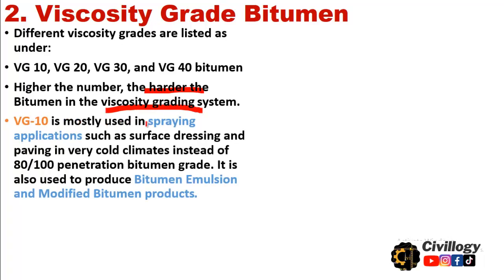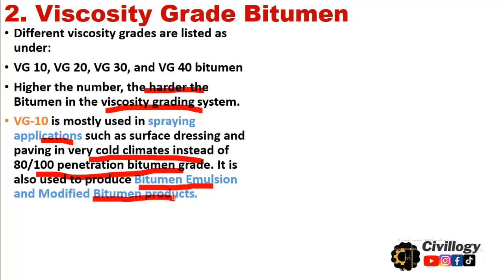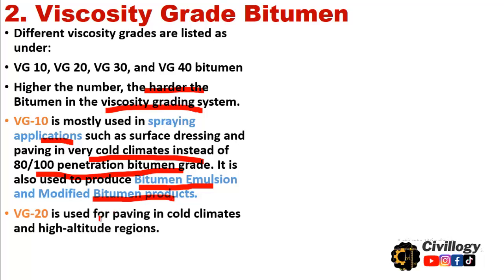VG10 is mostly used in spraying applications such as prime coat, tack coat, or any sealant to prevent moisture — such as surface dressing and paving in cold climates. Instead of 100/80 penetration bitumen grade, it is also used to produce bitumen emulsion and modified bitumen products. VG20 is used for paving in cold climates and at high altitude regions.